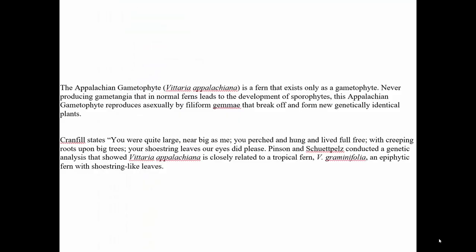Let's find out what Ray asked about and what the answers were. He wrote about the Appalachian gametophyte, which is a fern that only exists as a gametophyte. It doesn't produce gametangia. It doesn't lead to the development of sporophytes. It reproduces asexually by little filiform gemmae, as seen on their field trip to deep woods in the Hocking Hills. And it basically clones by breaking apart, by fragmenting.